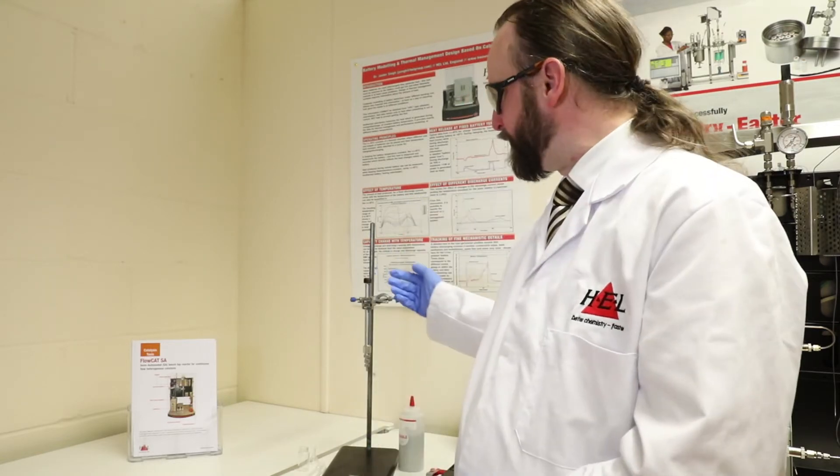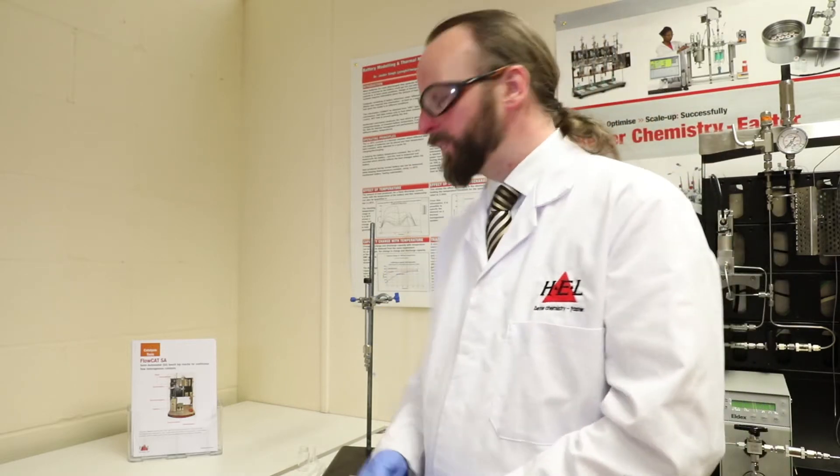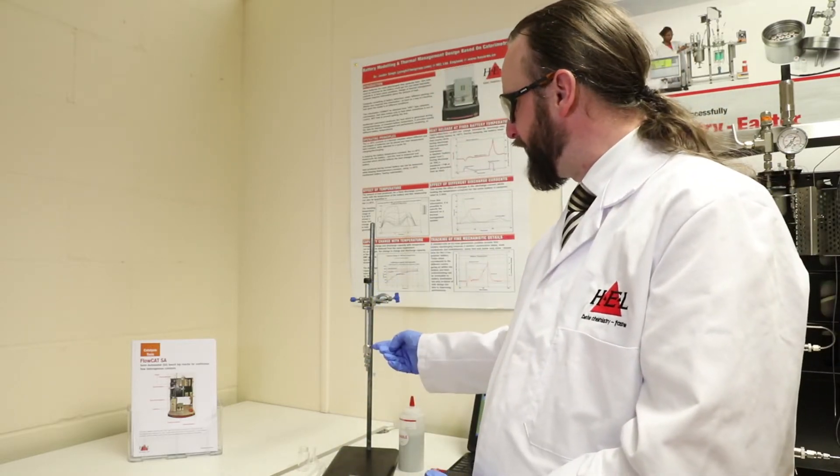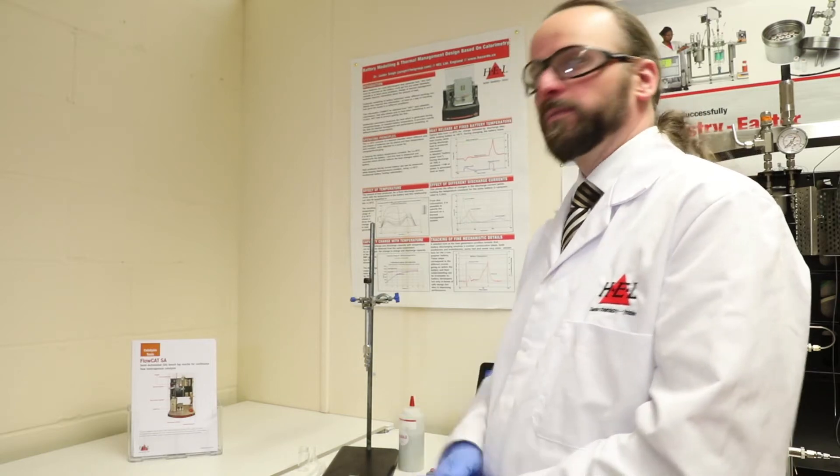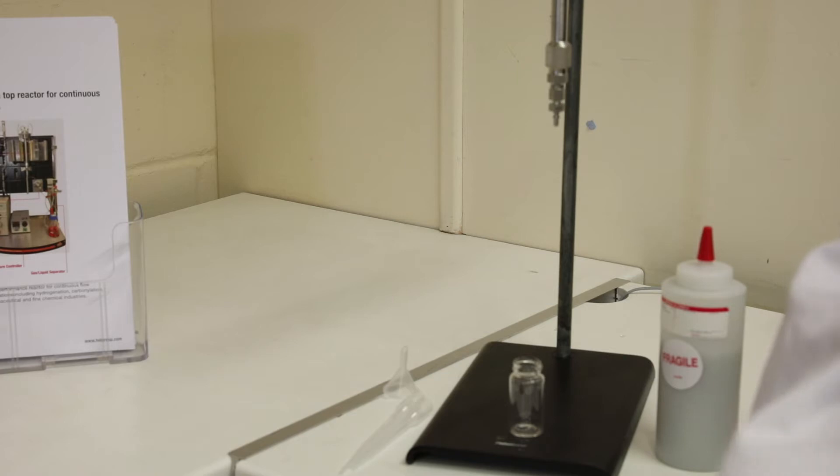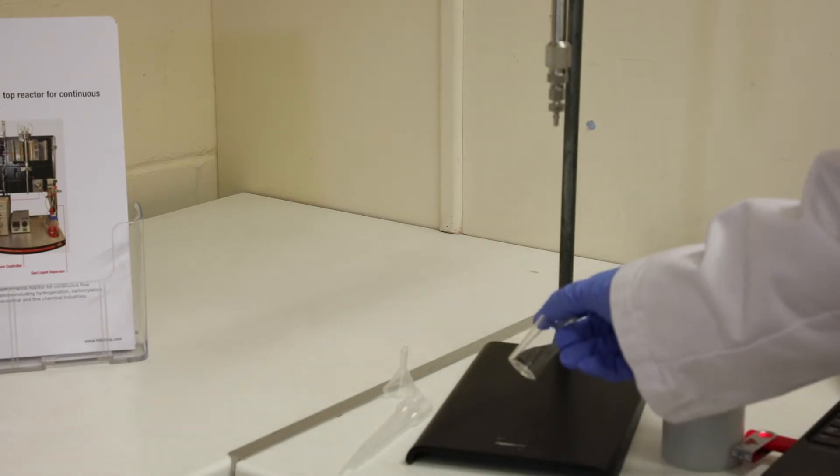So this is our fixed bed reactor from the Flowcat. This reactor is a six inch long stainless steel pipe with a frit at the bottom to retain the solid in the reactor. We have this glass vial here where I've just put a little mark on it to show the volume that is in the reactor.